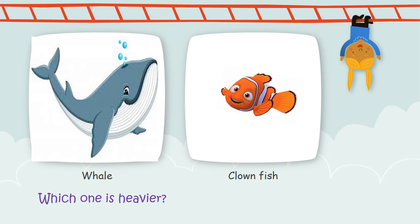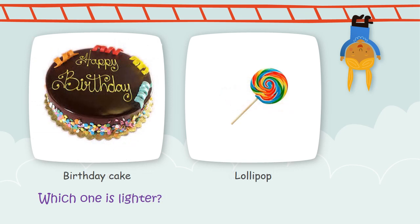Now, let's take a look at the pictures of a whale and a clownfish. Can you tell me which one is heavier? Yes, you're right. The whale is heavier than a clownfish. How about now? There is a birthday cake and a lollipop. What do you think? Which one is lighter? Well, you're right again. The lollipop is lighter than the birthday cake.